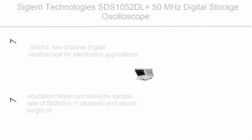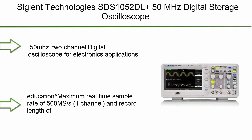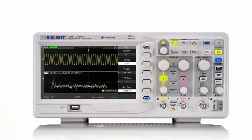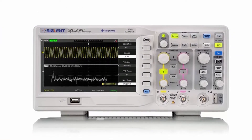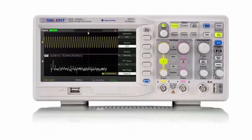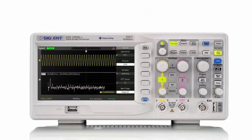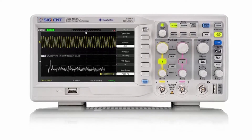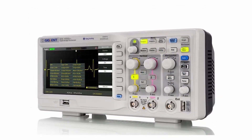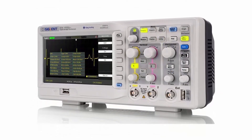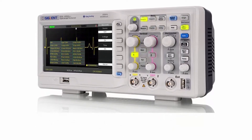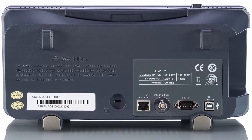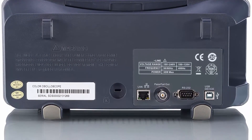Top 4: Siglent Technologies SDS-1052DL 50 MHz Digital Storage Oscilloscope. 50 MHz 2-Channel digital oscilloscope for electronics applications such as product design, assembly lines, repair and servicing, and electrical engineering education. Maximum real-time sample rate of 500 MS/s per channel, record length of 32 kpts per channel for acquiring detailed waveforms. Higher resolution display, advanced triggers for isolation of specific signals, built-in frequency counter, automatic measurements, USB and LAN interfaces.